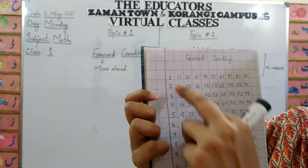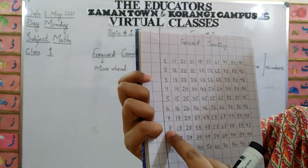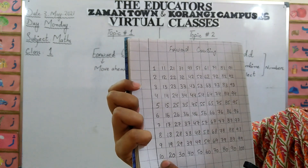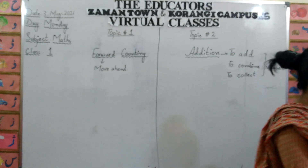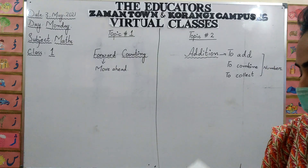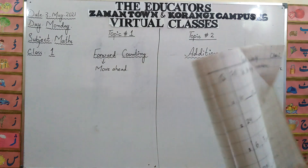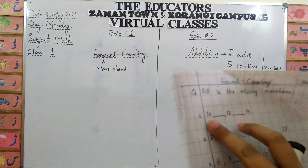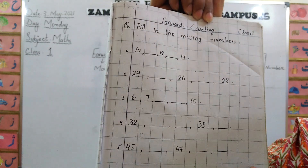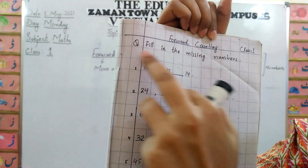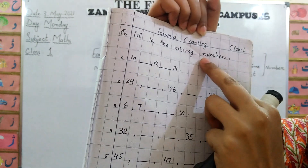Let me read again: one, two, three, four, five, six, seven, eight, nine, ten. Now, you will do practice at home about forward counting. There is a copy work of forward counting that you will do in your copy. Mention the date: third May, and make a page. Put the heading forward counting. The question is: fill in the missing numbers.